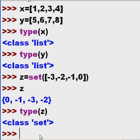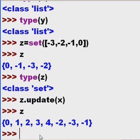Well, I'm going to take z. I'm going to update z with x, which is 1, 2, 3, 4. And let's see what z looks like now. Oh, 0, 1, 2, 3, 4, negative 2, negative 3, negative 1. Remember, it is an unordered list, an unordered set of items. Okay.